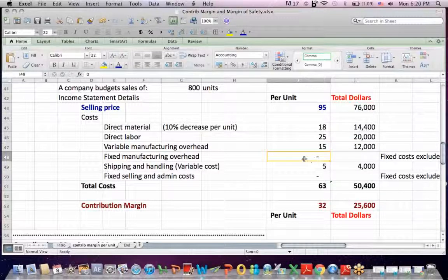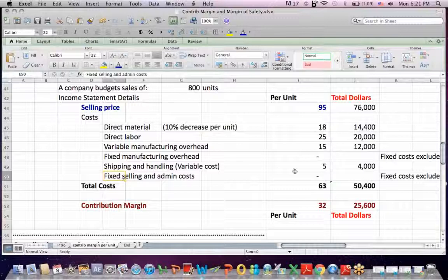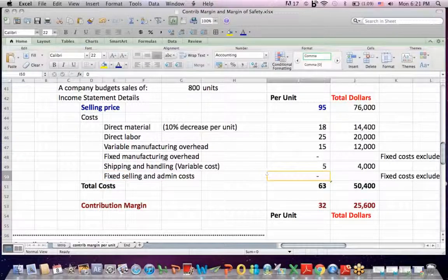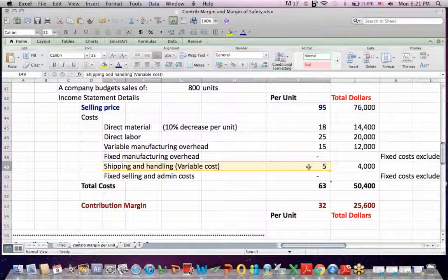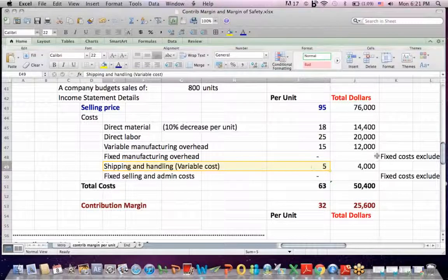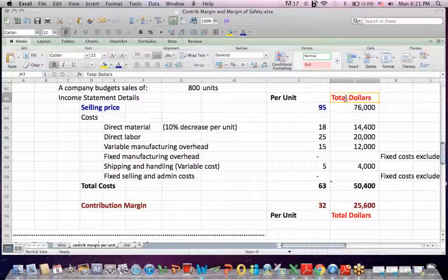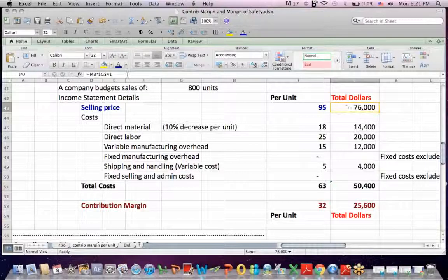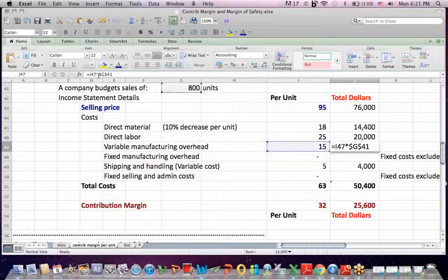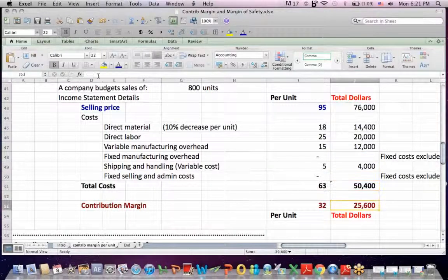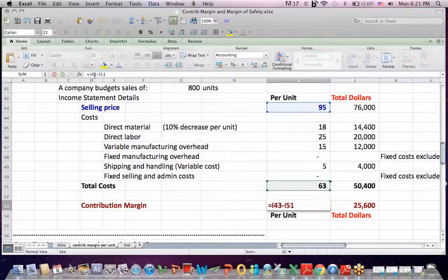We ignore fixed manufacturing overhead. It's contribution margin. We ignore fixed selling and administrative costs because it's contribution margin. We do include shipping and handling. That's a variable cost depending on how many units we sell or produce. And so these numbers on the total dollars column are multiplied by the 800 units as I work my way down.